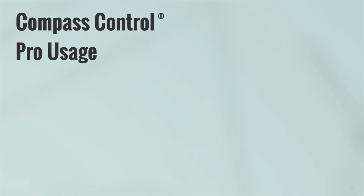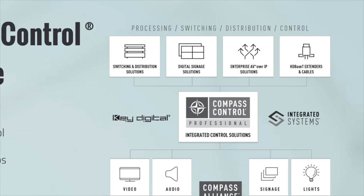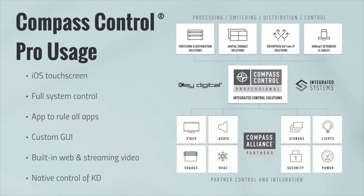When is our Key Digital Compass Control Pro system used? Any time your client requires an iOS touch screen to control their entire system — not just one device or one brand, but all controllable devices that may have IR, RS-232, TCP/IP control, or even voltage triggering and relay control. Devices that may be video, audio, shade, thermostat, security, lighting control, etc. When you want one app to rule them all, that's when you go with Key Digital Compass Control — our modern assortment of IP-based modules in addition to IR and RS-232.